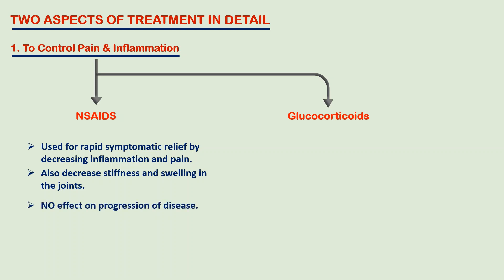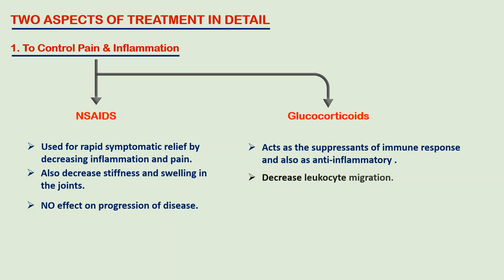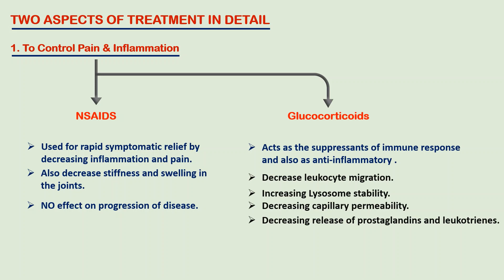However, NSAIDs have no effect on the progression of the disease. Glucocorticoids mainly act as suppressants of immune response and as anti-inflammatories by decreasing leucocyte migration, increasing lysosomal stability, and decreasing capillary permeability. They also decrease the release of prostaglandins and leukotrienes, inhibit expression of COX-2, and decrease interleukins.